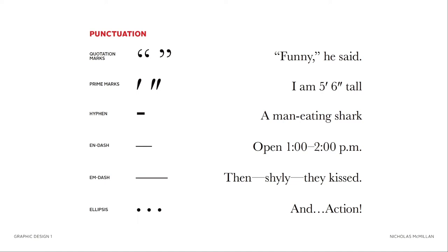Finally, we have ellipses. The ellipsis is not just three periods — you don't just type in three periods. It's actually a separate character within a type family, and you get that special character by holding down Option-Semicolon, or Alt-Semicolon on a PC.